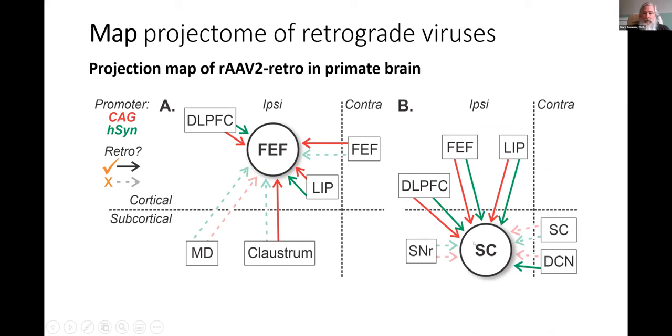Similarly, we've done these experiments in the superior colliculus and we see the emergence of a nice projectome map there too. Corticotectal projections are really well labeled, regardless of promoter. Almost all the subcortical projections we've looked at are poorly labeled or completely missing. For example, from the substantia nigra pars reticulata, which should have really nice labeling, but doesn't.